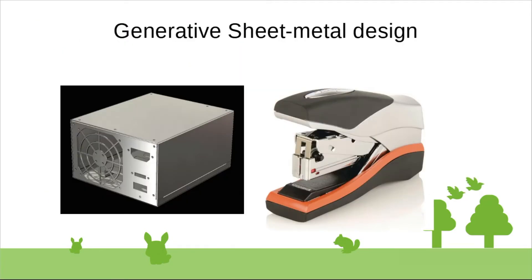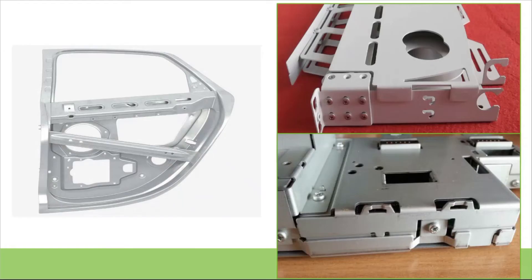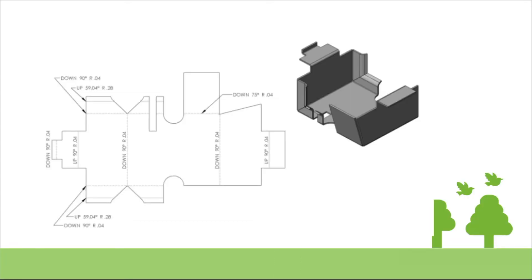The next workbench is Generative Sheet Metal. This workbench will help us to design sheet metal objects like CPU box, SMPS box, and stapler. Any product that is made of a single sheet by using cutting, bending, punching, and folding processes can be created on the Generative Sheet Metal workbench.